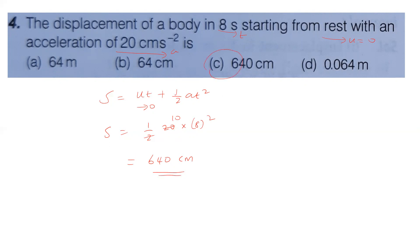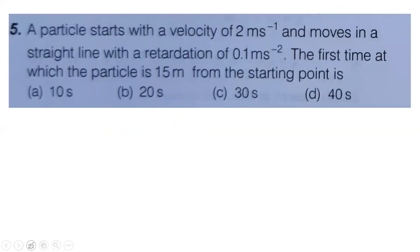Fourth question answer: third option is correct, 640 centimeter. Fifth question: a particle starts with velocity 2 meter per second and moves in a straight line with retardation of 0.1 meter per second square. Find the first time at which the particle is 15 meter from the starting point.